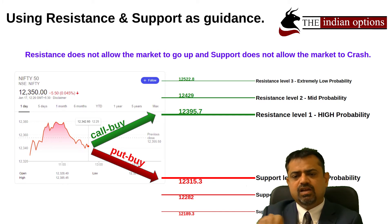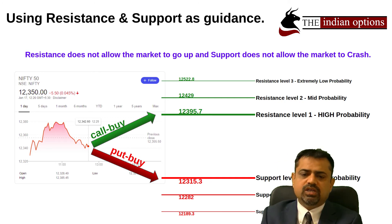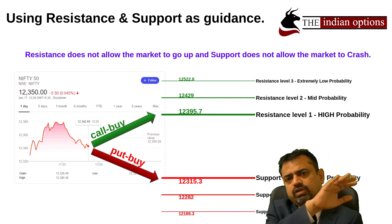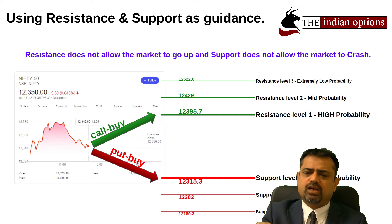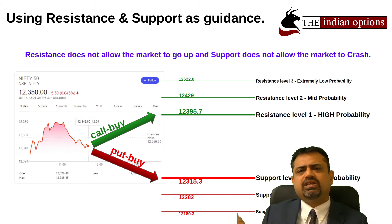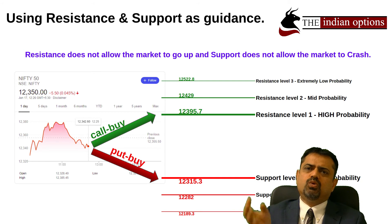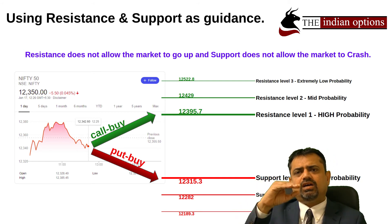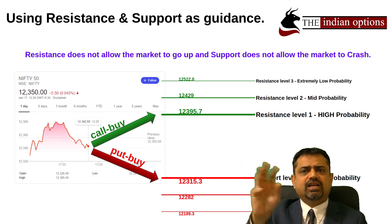On the downside, if the market is crashing, in this example the market could crash to 12,315, or 12,282, or further down to 12,189. So some traders might open a trade expecting the market to go maximum until 12,315, and will choose a strike price of 12,300. There are a lot of traders who use support and resistance levels as their guiding star to do their trading.